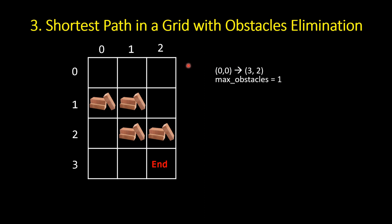The next problem is finding the shortest path in a grid with obstacles elimination. You are given a grid of size m×n and you have to reach from (0,0) — top-left corner — to (m-1, n-1) — bottom-right corner. There may be obstacles in the way, and you have to find the length of the shortest path. You can eliminate at most the given number of obstacles.